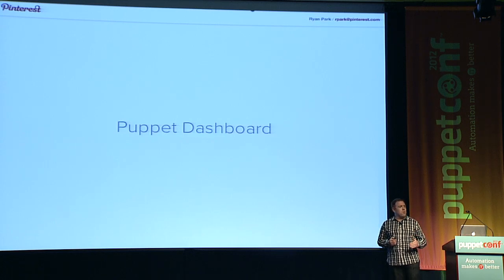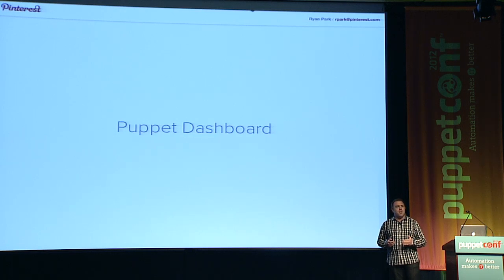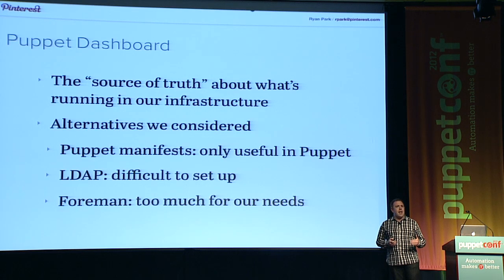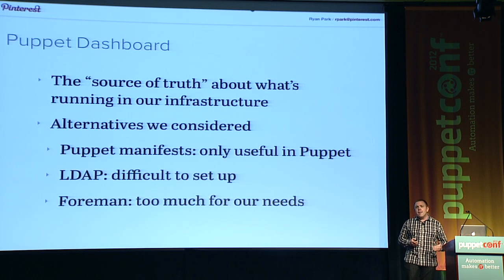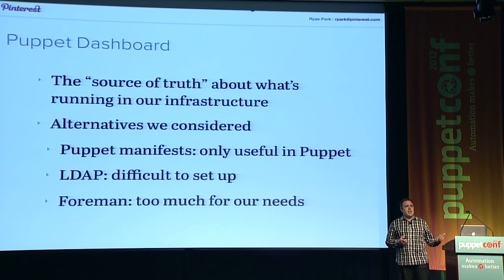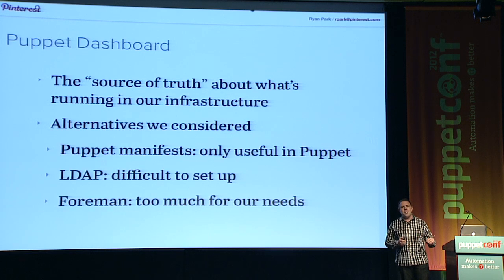Puppet Dashboard is a web application — an open source product from Puppet Labs. It lets you define all of your servers and what Puppet classes should be installed on those servers. We use this data as the source of truth about what's running in our environment. All of our EC2 instances are listed in Puppet Dashboard. The most basic option is not to use an ENC at all and just put your nodes in the Puppet manifest, but that limits the utility of that data to Puppet itself.